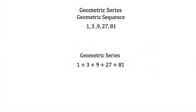Looking at our example sequence: 1, 3, 9, 27, and 81. My first term is 1, and to get my second term I would take 1 and multiply it by 3 to get 3. To get my third term I multiply 3 by 3 and get 9. To go from 9 to 27 I multiply by 3, and from 27 to 81 I multiply by 3 again. Since this multiple between each term is the same — in this case 3 — this is a geometric sequence.